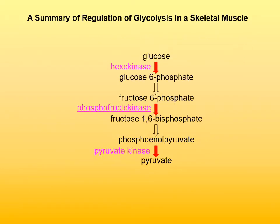Here is a summary of regulation of glycolysis in skeletal muscle. The regulated steps are shown in this scheme, and as you can see, the principal point of regulation is the committed step of glycolysis, which is catalyzed by phosphofructokinase.